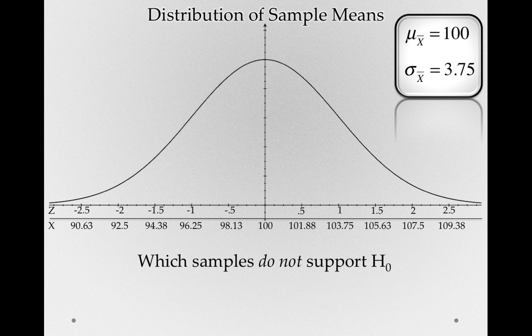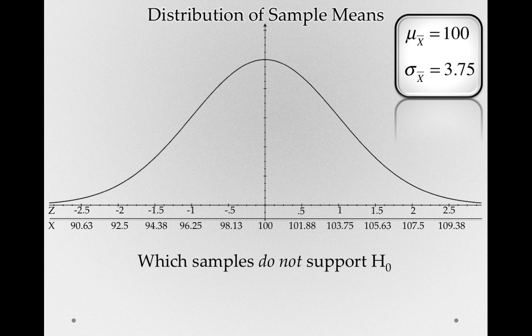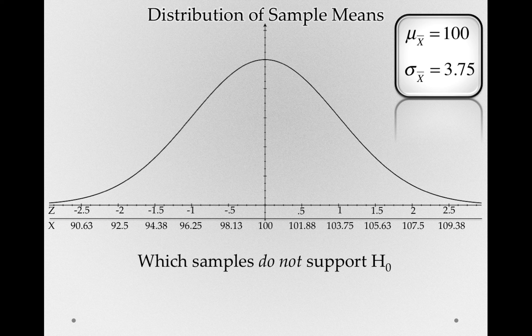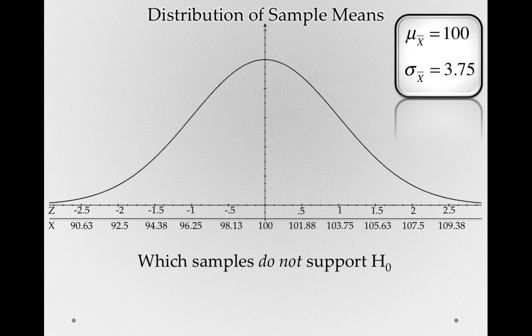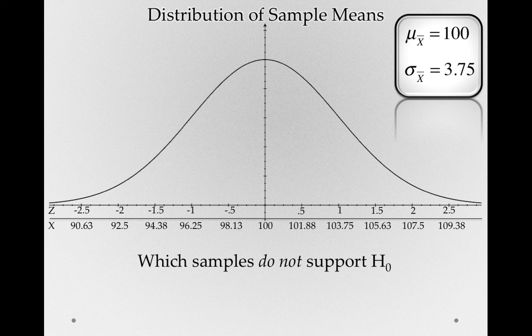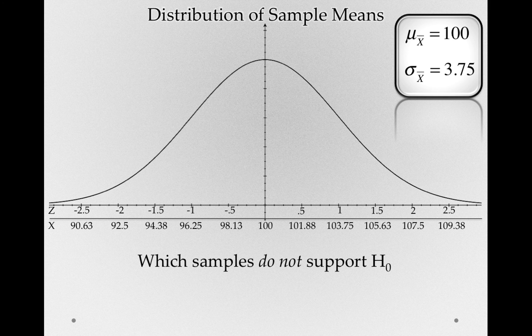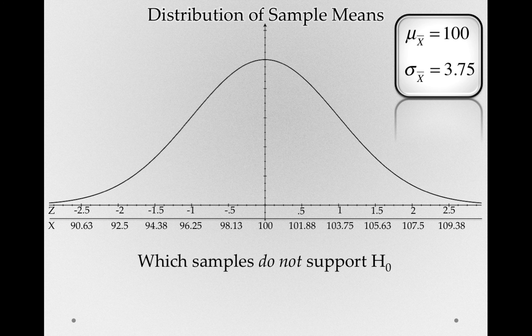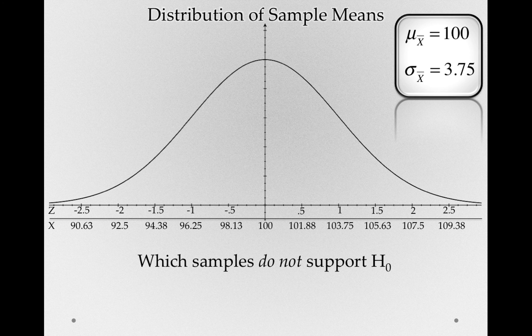How extreme, that is, how far from 100, would a sample mean have to be for us to no longer believe that the null hypothesis is a reasonable explanation? Remember, we're just taking one sample, just one sample from all the possible samples we could possibly get, and we're going to have to use that sample to decide whether it's reasonable that it came from a population centered right at 100. How would you draw the line? Where would be extreme enough for you to stop believing in the null hypothesis?